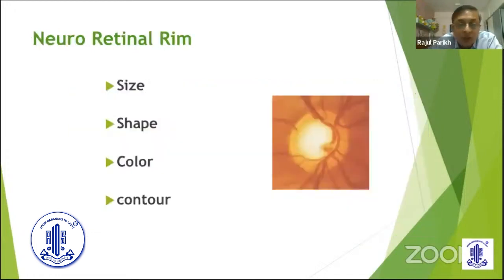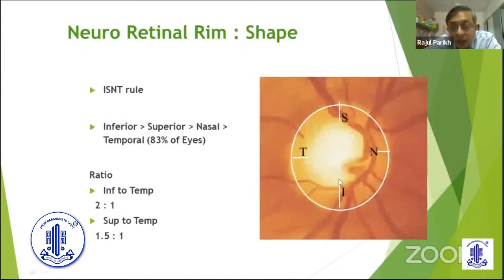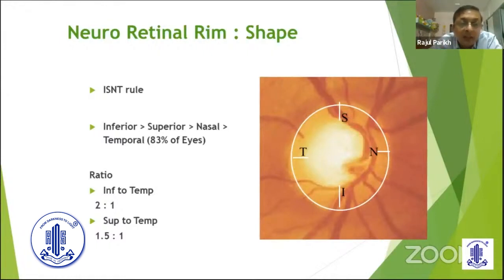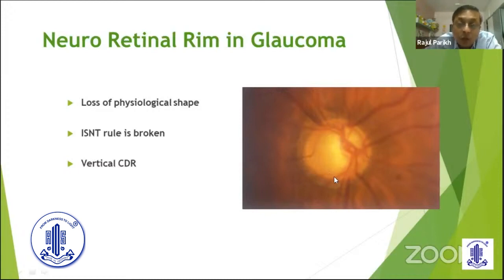The neuroretinal rim examination is very important. The ISNT rule states that the inferior rim is thicker than the superior, which is thicker than the nasal, which is thicker than the temporal — and this is followed in approximately 85% of patients. So just follow the ISNT rule; it is a very good guide. The second thing to look for is a notch — you can see here the inferior rim is lost. This localized loss is called the notch, and that is what you look for in the neuroretinal rim.